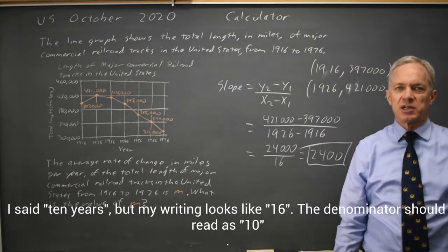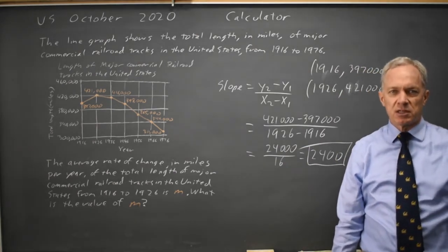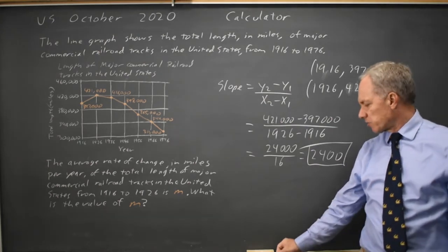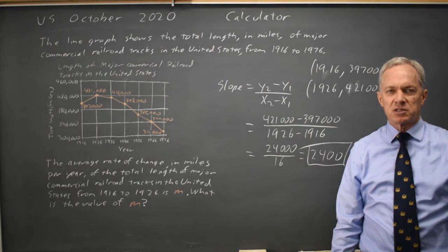Again, if you only looked at the change in y's, you would get 24,000, which is a five-digit number, and we can only grid in four digits, so that would be a reminder to check for a denominator in your slope.